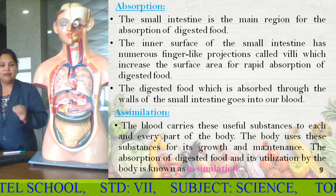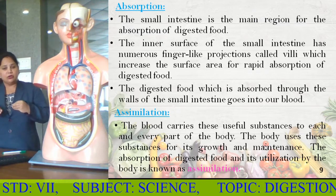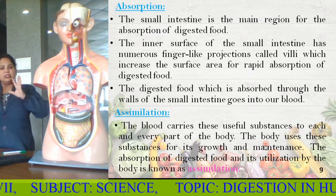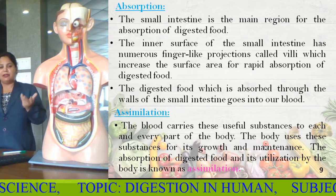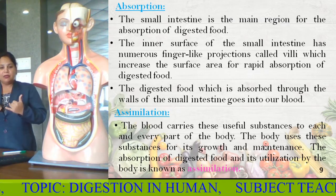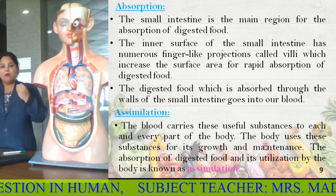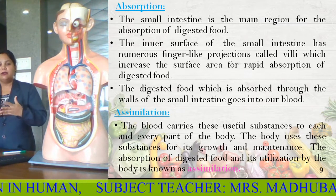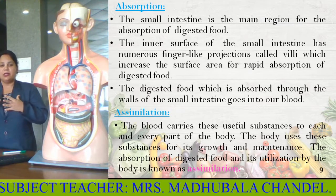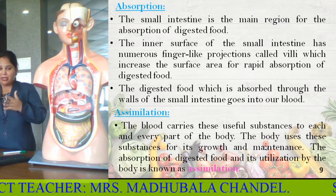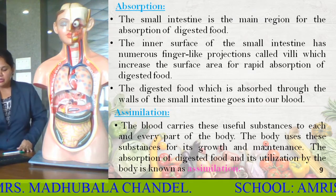The absorption of the digested food and its utilization — whatever absorbed food is there, it has to be utilized. Some people eat a good diet but still have low energy levels. Why? Because there is no complete utilization of the energy stored in the body. That's why we say: eat good food, exercise, and have good sleep. That is the utilization of food in the body, and when it takes place, it is called assimilation.